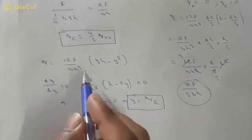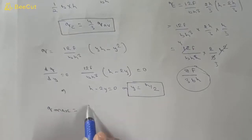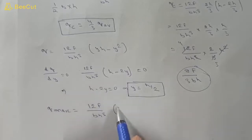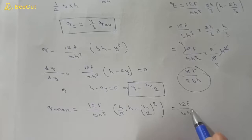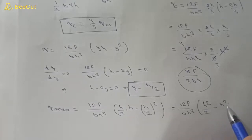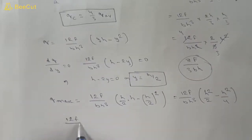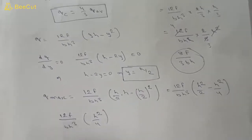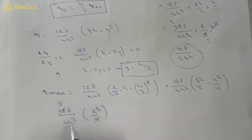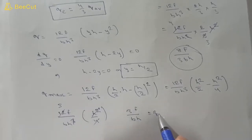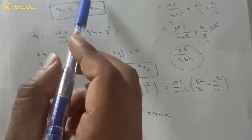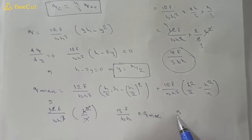Substituting y = h/2 into the formula: q_max = 12F/(bh³) * (h/2) * (h − h/2) = 12F/(bh³) * (h/2) * (h/2) = 12F/(bh³) * h²/4 = 3F/(bh). Since q_avg = 2F/(bh), we get q_max = (3/2) * q_avg = 1.5 * q_avg.